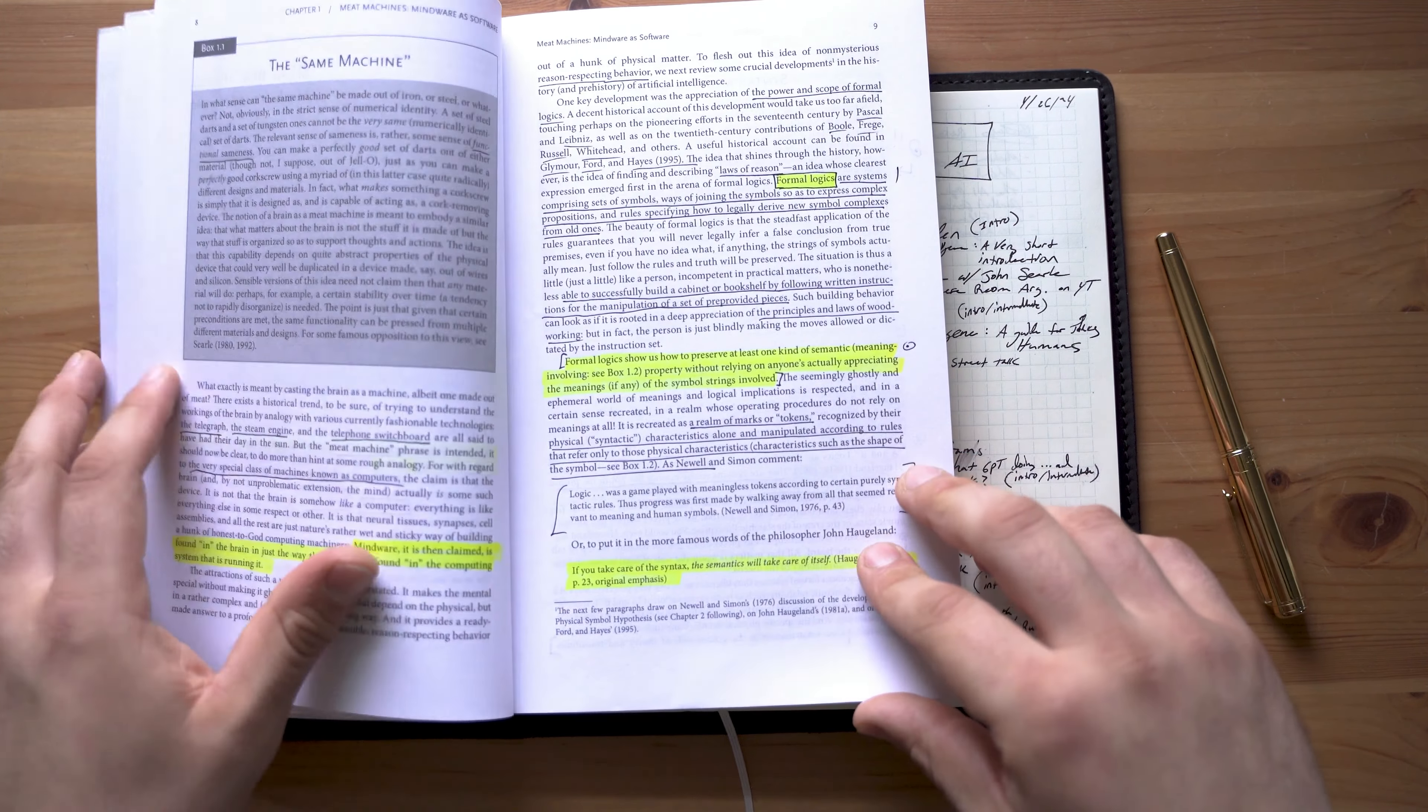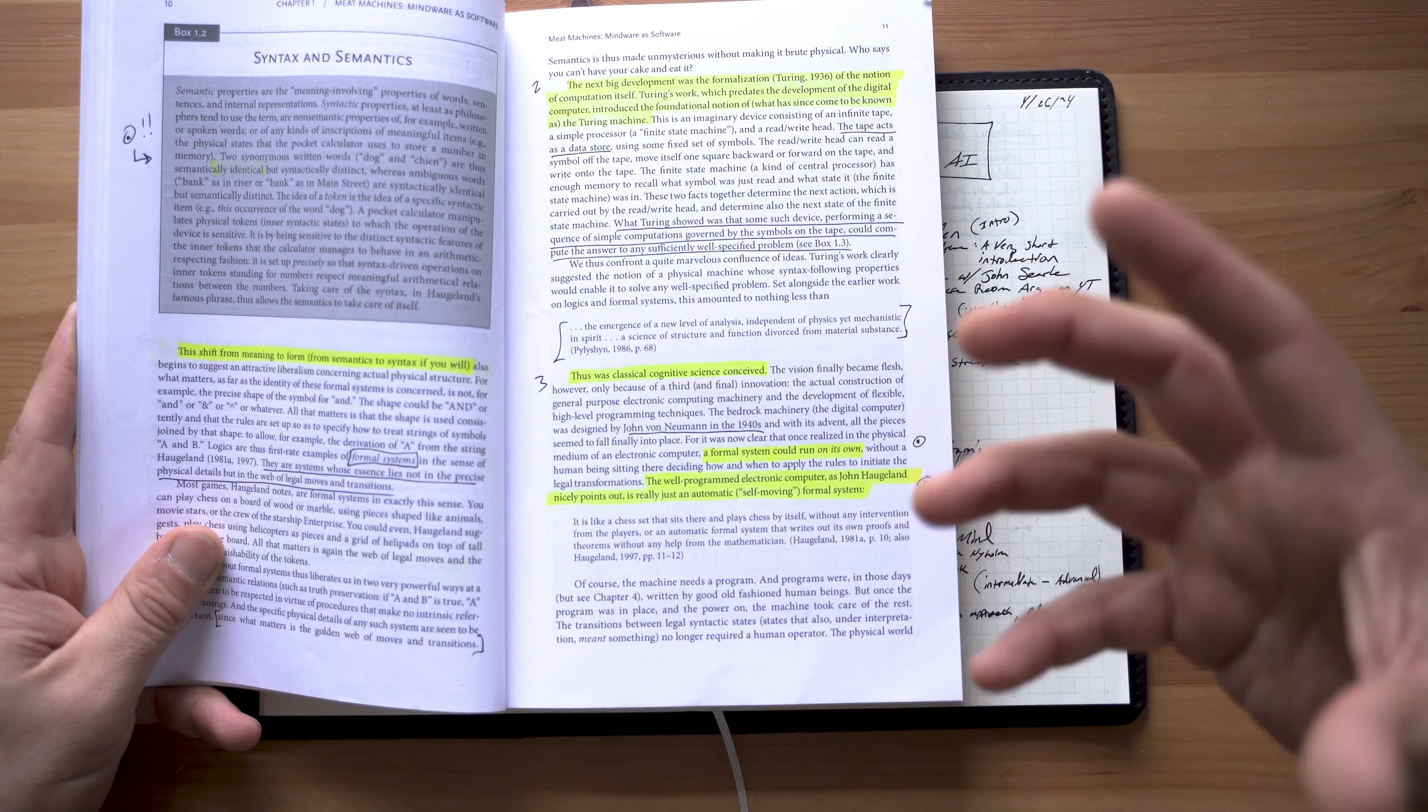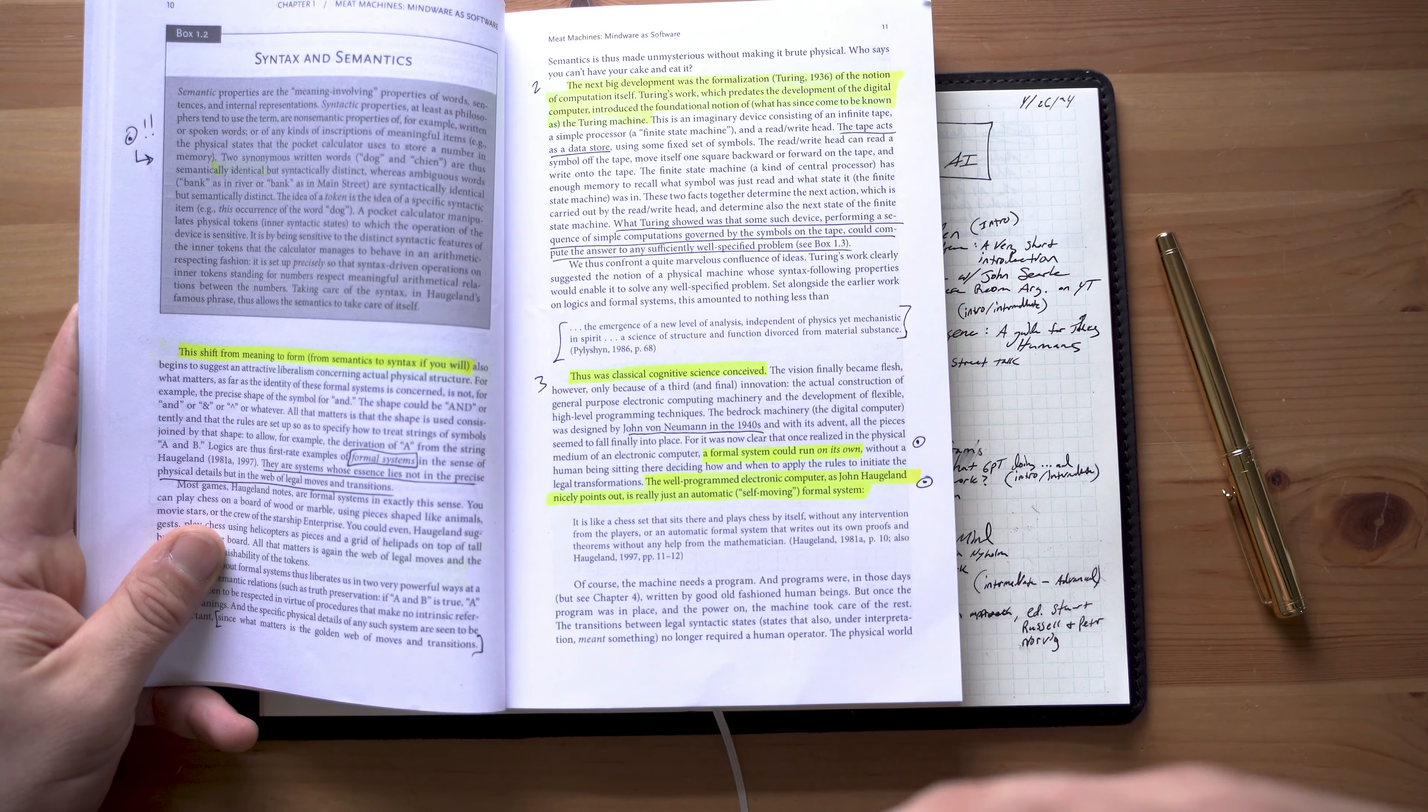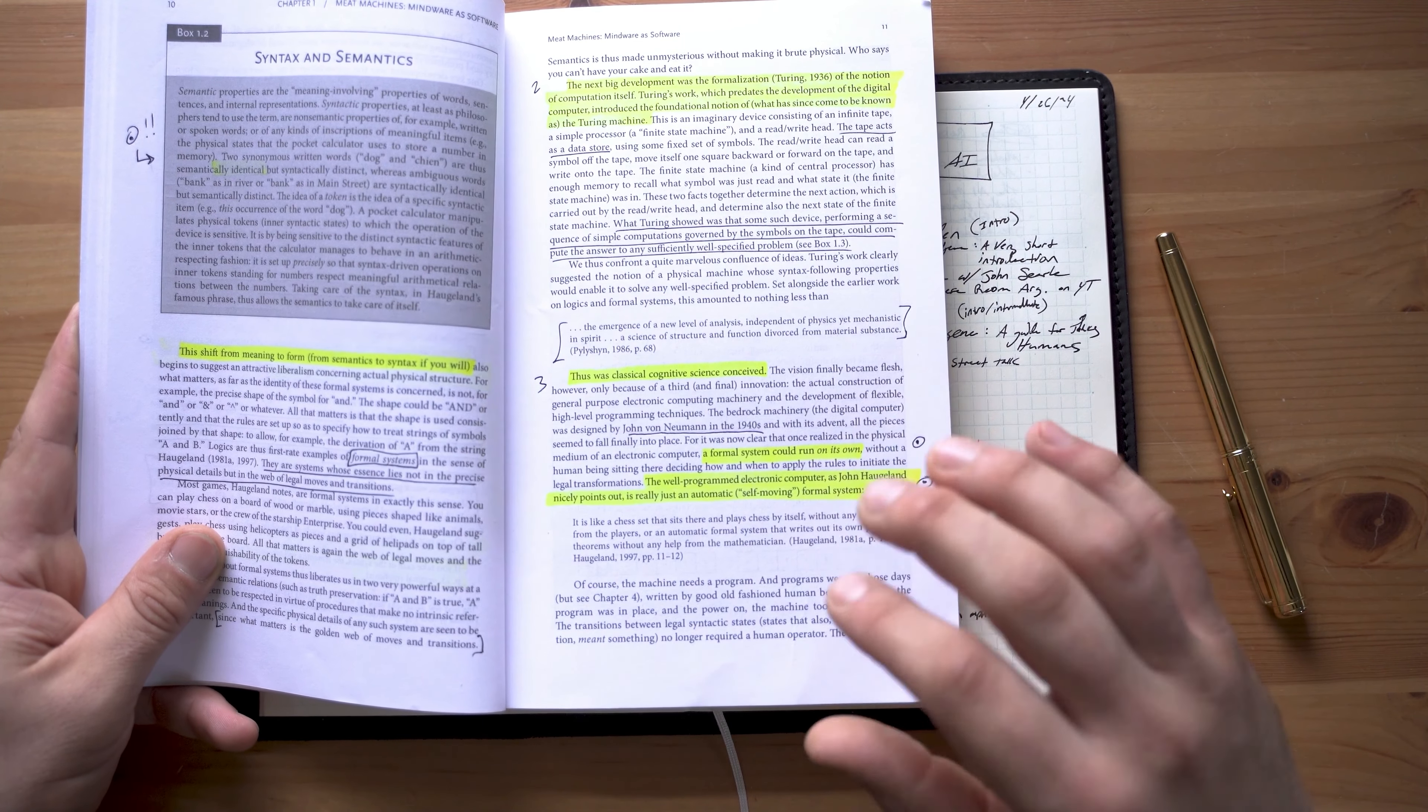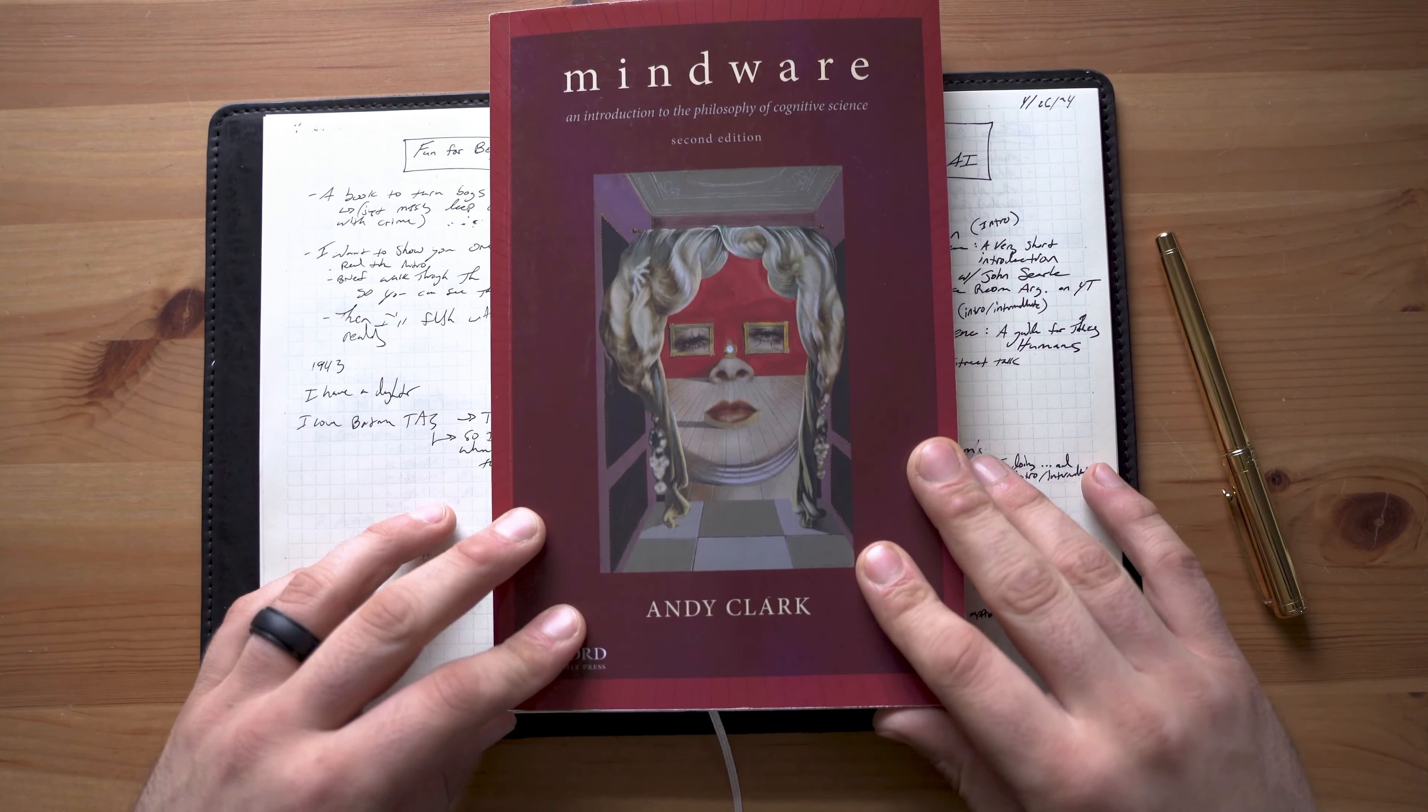Cognitive science is super duper fun, especially when it gets more philosophical. So once you have a good grasp of where we're at in artificial intelligence and how we got here, you may want to step into the philosophy of artificial intelligence a little bit deeper and get into the philosophy of cognitive science. This is the book for you.